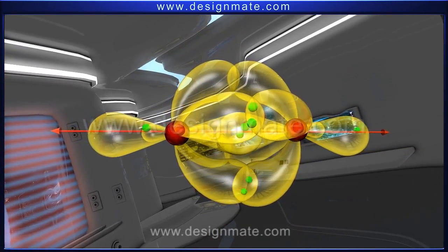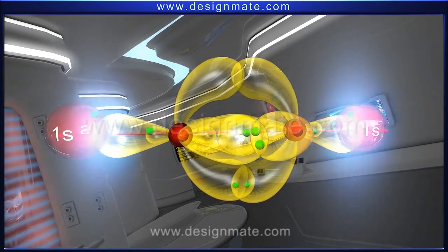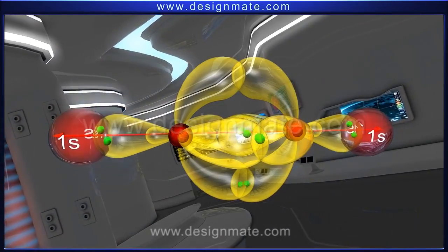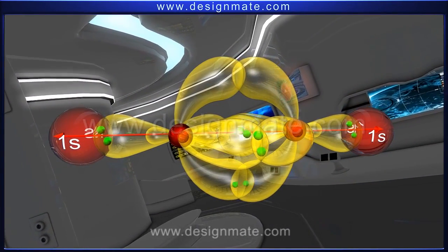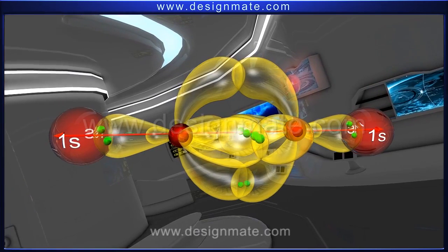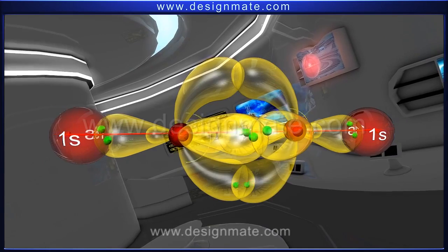The fourth valency of each of the carbon atoms is satisfied by two 1s orbitals of hydrogen, which also makes sigma bonds along the internuclear axis. The quest of the carbon atom is now complete, and an acetylene molecule is formed.